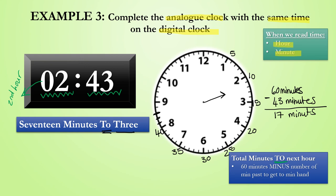Let's include the minute hand. Now we have updated the analog clock with the same time displayed on the digital clock as required. Now if you completed this example correctly, then well done. If you did not, then don't be discouraged. With time and practice, you will improve.